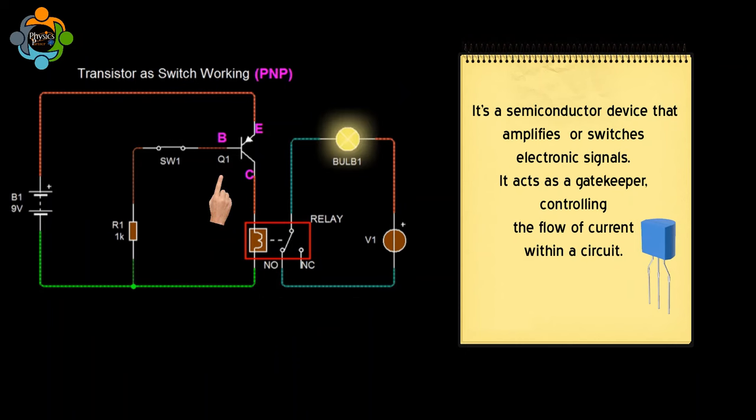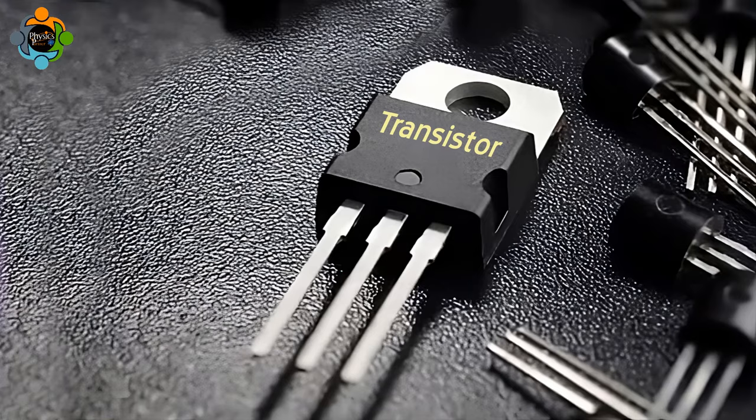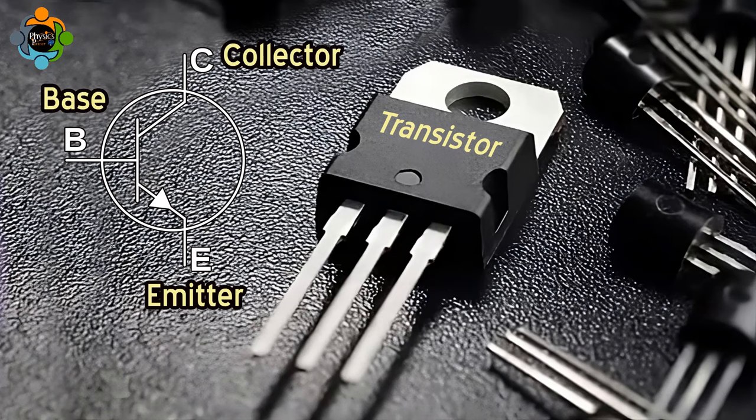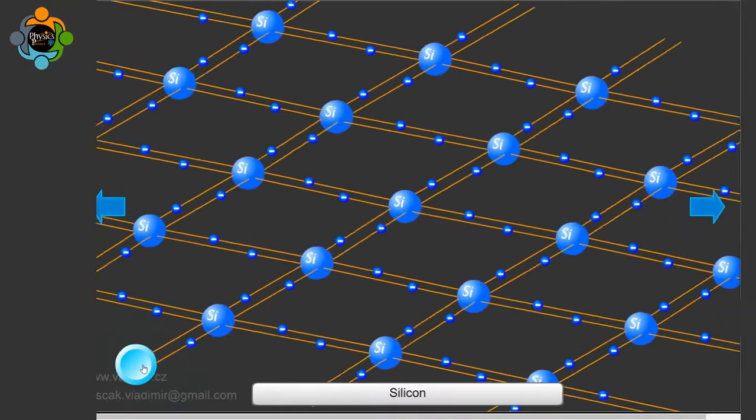It acts as a gatekeeper, controlling the flow of current within a circuit. A transistor typically consists of three layers: the emitter, base, and collector. These layers are made of materials like silicon or germanium, carefully designed to manipulate the movement of electrons.